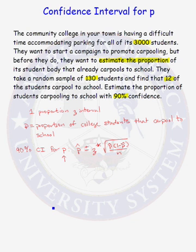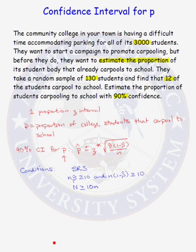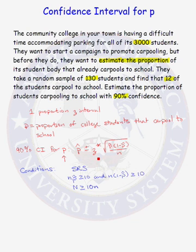Before constructing the confidence interval, we should check to make sure that all the conditions necessary to construct the interval are valid. The conditions necessary are: our sample must be a simple random sample; N times P-hat has to be greater than or equal to 10, and N times 1 minus P-hat has to be greater than or equal to 10 — this must be met so that we can use the normal approximation for our sampling distribution of P-hat. The third condition is that the size of our population has to be at least 10 times the size of our sample, which allows us to use this quantity as the estimate for our standard error of P-hat.